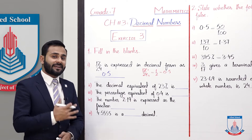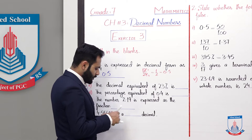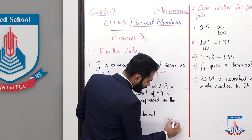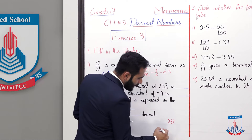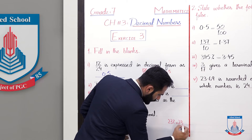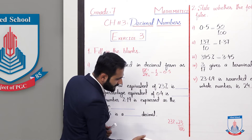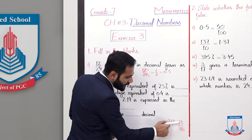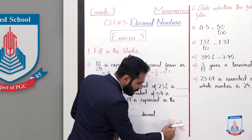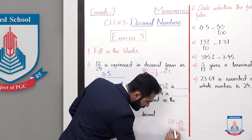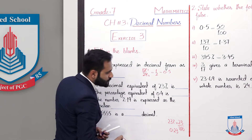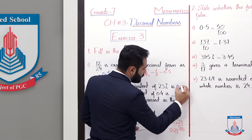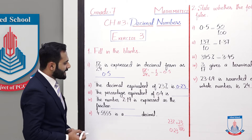The second blank: the decimal equivalent of 23 percent. As we know, 23% equals 23 divided by 100. Percentage means equal to 1 over 100, so we divide by 100 — the point moves two digits back. It becomes 0.23. Fill the blank: 0.23.